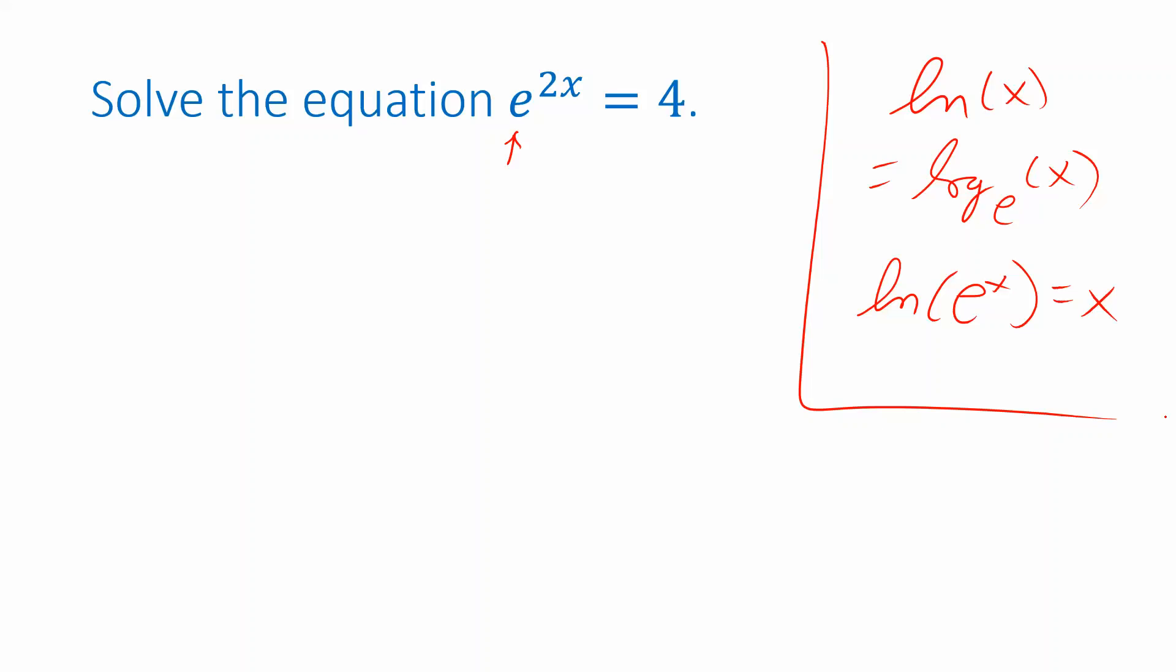Another way to think of it is to use a property of logarithms. If you start out with natural log of e to the x, one property of logarithms allows you to take this exponent and move it out front as a coefficient. So you get x times natural log of e. And because natural log is actually log base e, log base e of e is just 1. So this simplifies to just x times 1. Either way you want to think about it, using this property of logarithms or by thinking of the natural logarithm as the inverse of the exponential function e to the x, this is the key simplification we need. So let's see how that gets used.